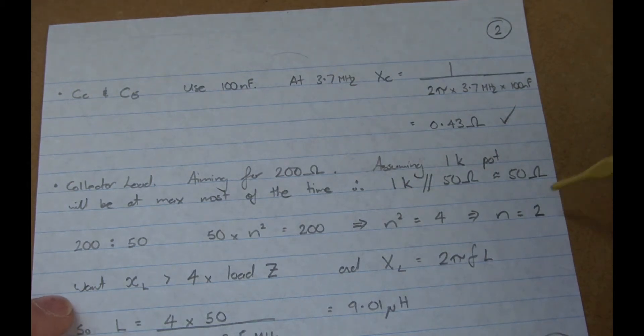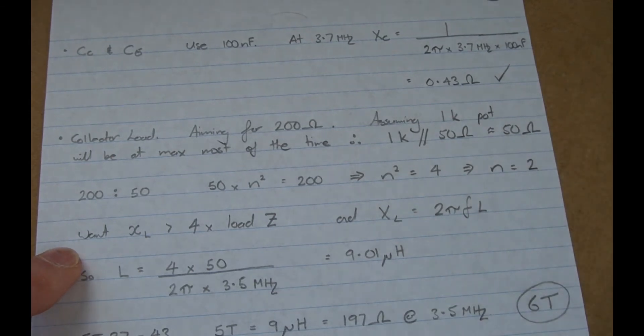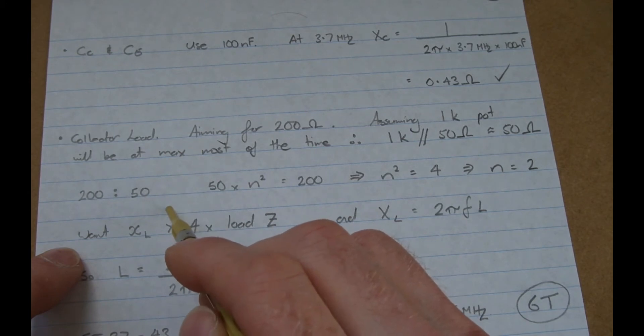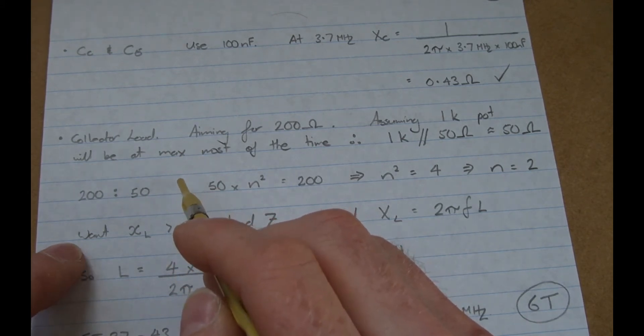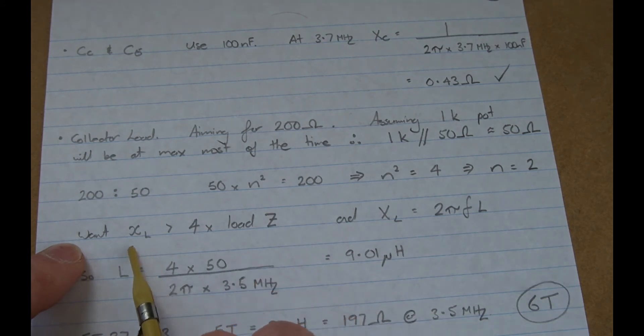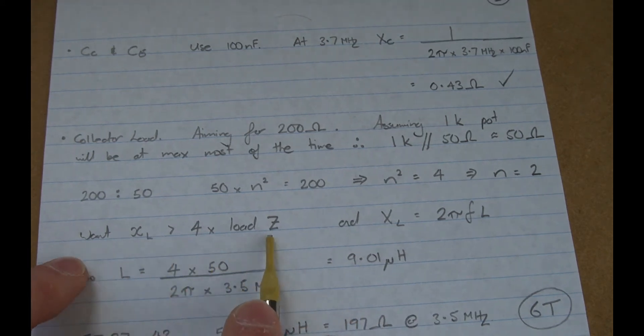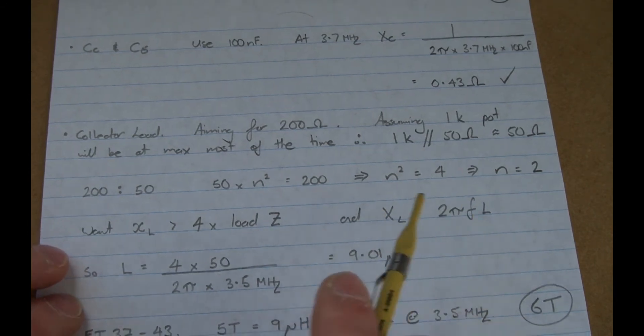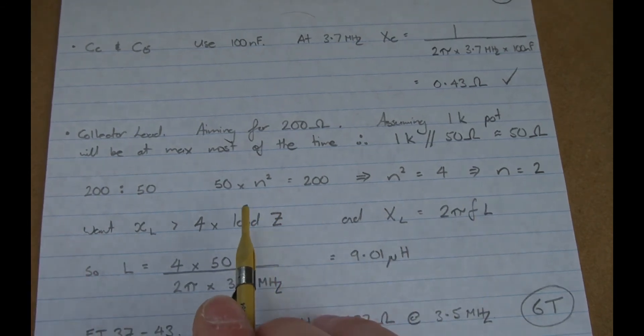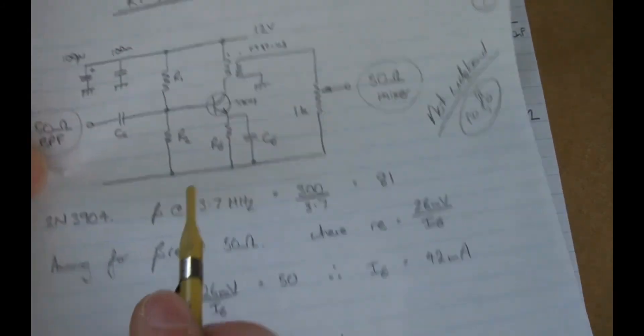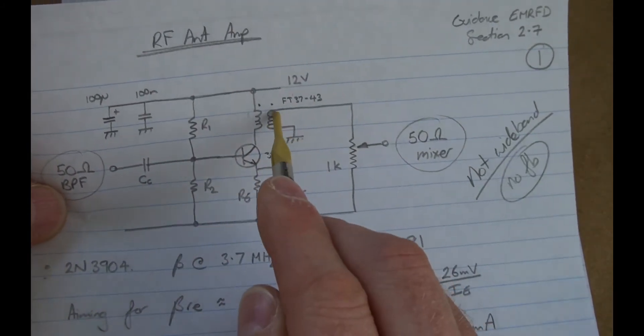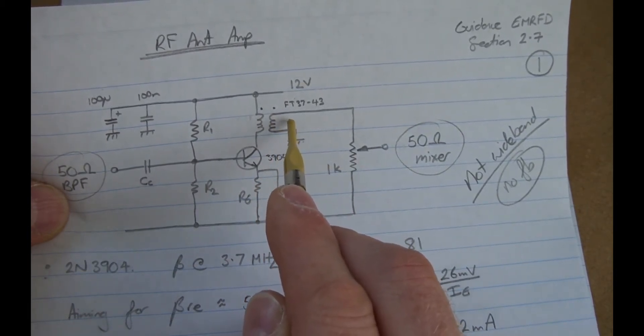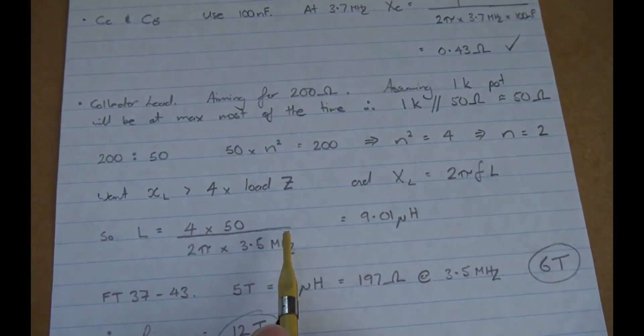So, now the other rule of thumb we want to do, is we want to make sure that the smallest, the winding, which has the least amount of inductive reactance, we want to make sure that's at least 4 times the load impedance. So, in noting that XL equals 2 pi FL, we want to make sure that for that 50 ohm side, that the inductive reactance of this coil here is at least 4 times 50.